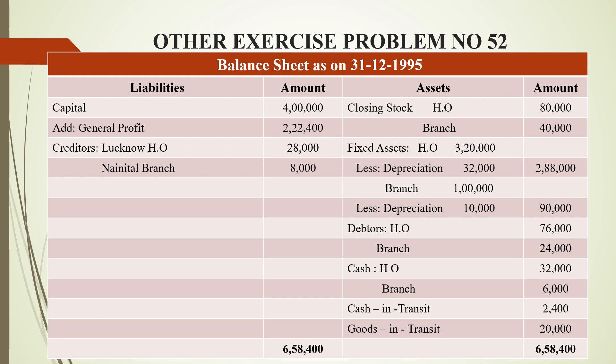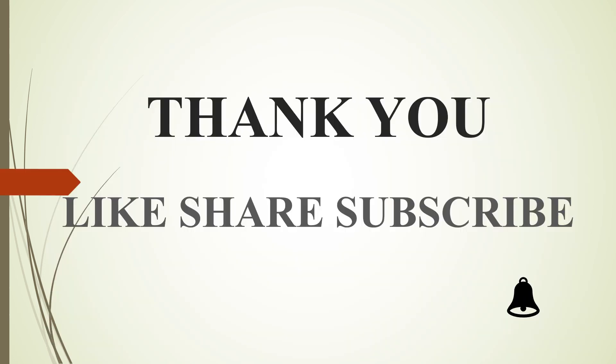Debtors for head office are 76,000 and branch are 24,000. Cash for head office is 32,000 and branch is 6,000. Cash in transit is 2,400 and goods in transit is 20,000. These in-transit items are included because they are between the branch and head office. The grand total of the combined balance sheet is 6,58,400 rupees. Thank you.